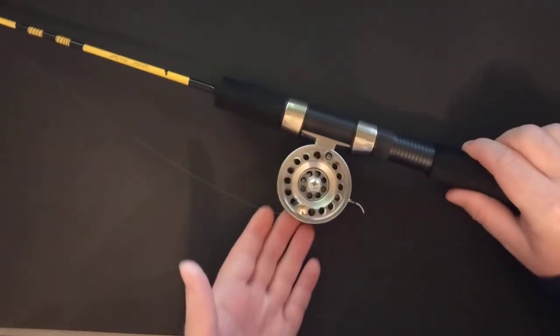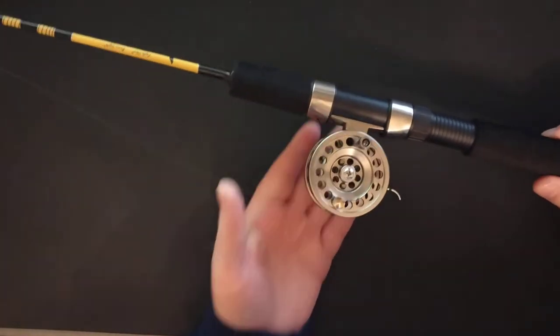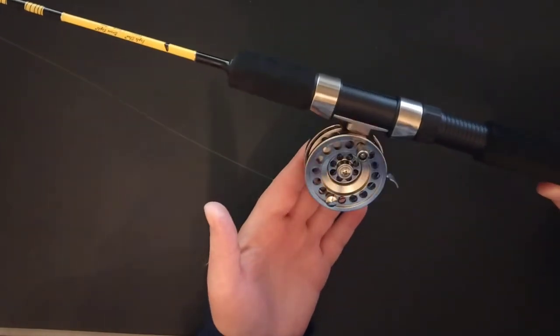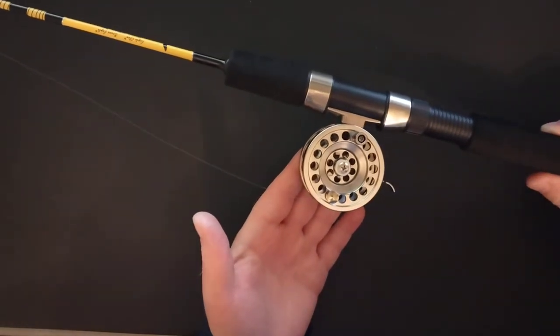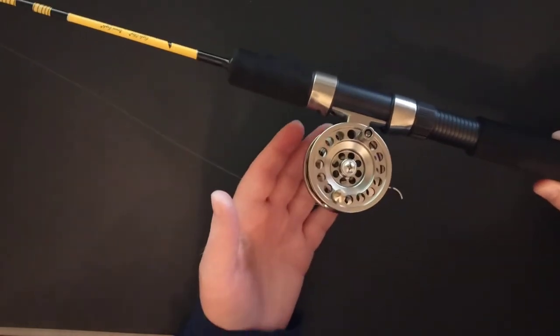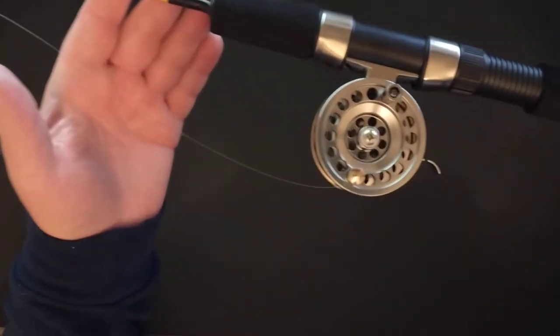It's another one of these all metal construction reels. This is aluminum, anodized, really nice quality. This costs about $14 to $15 on AliExpress. Let's take a quick look at it.